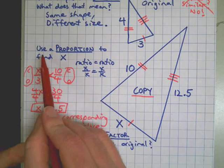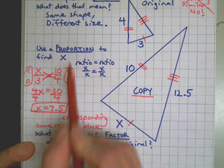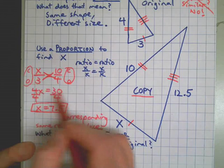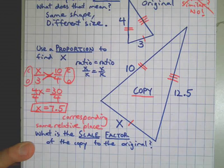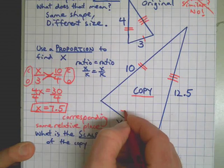There. Now I'm going to check my question again. Use a proportion to find X. I have a proportion, two ratios. I solved it. I have X. I'm done with that part. I can even label it over here X = 7.5, makes sense.